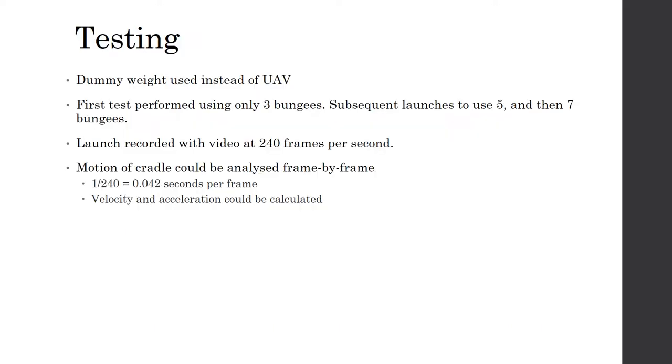The testing of the catapult was done using a dummy weight or slug instead of the UAV itself. The first test was performed using only 3 bungees. Subsequent launches were to use 5 and then 7 bungees.